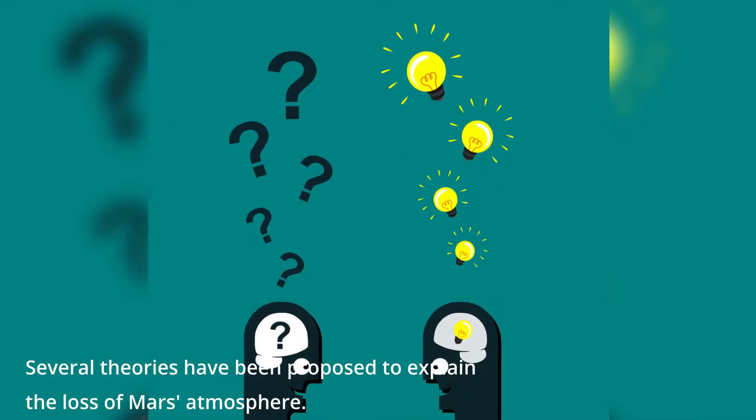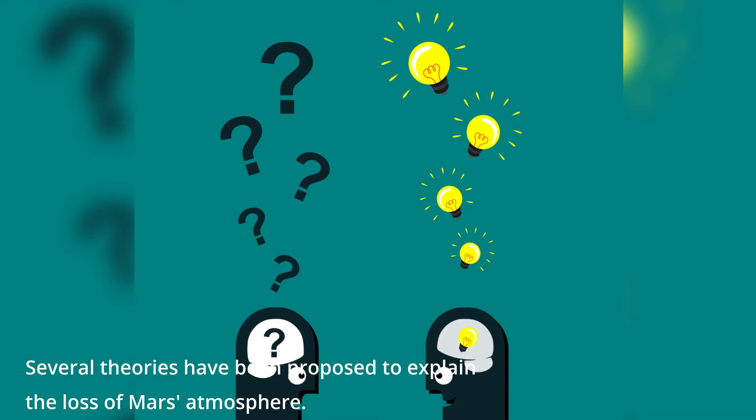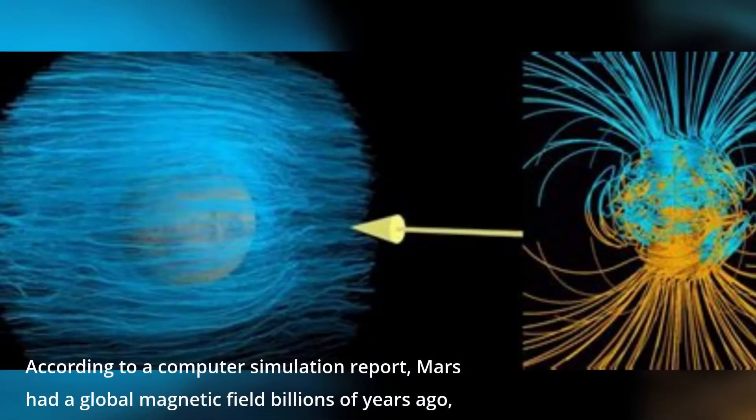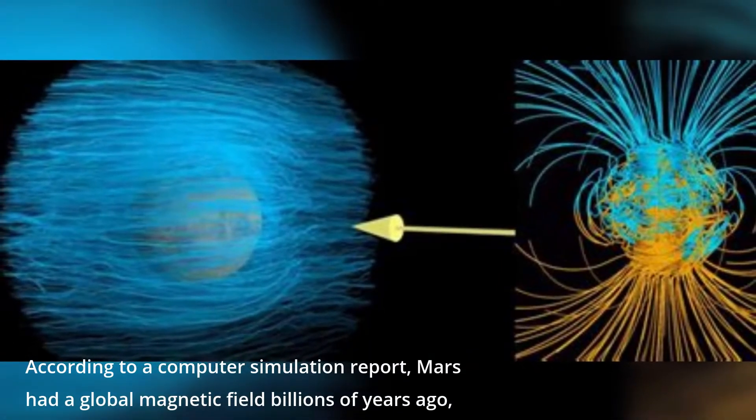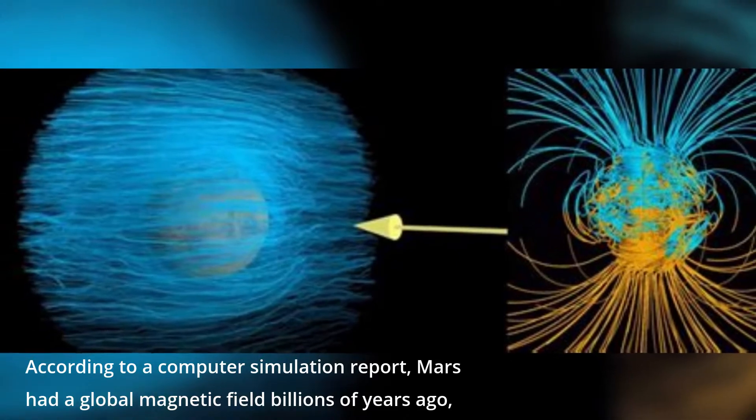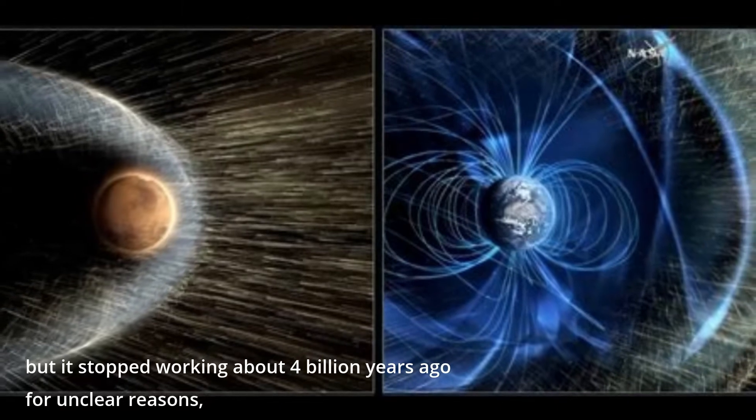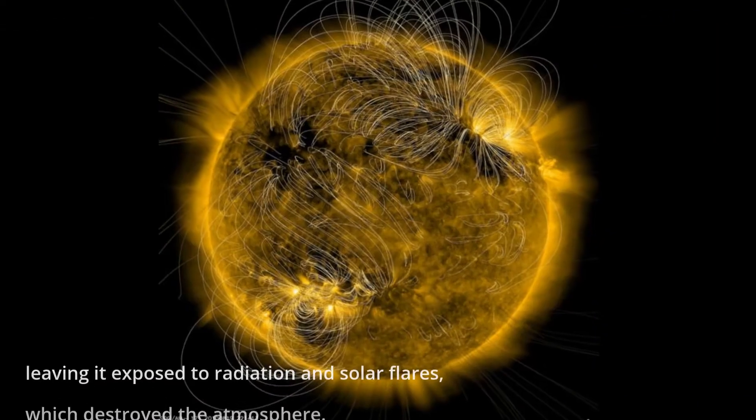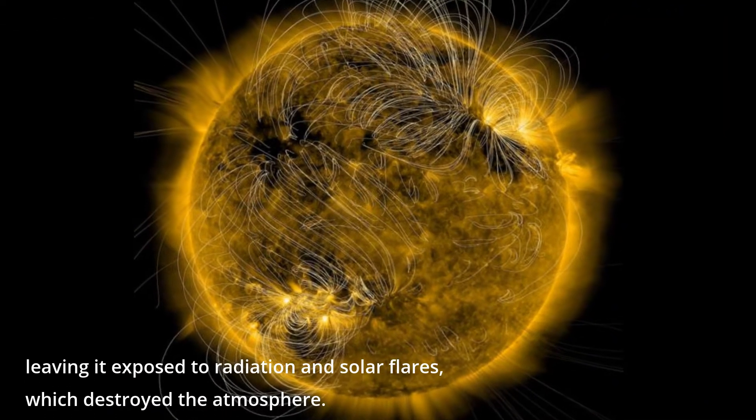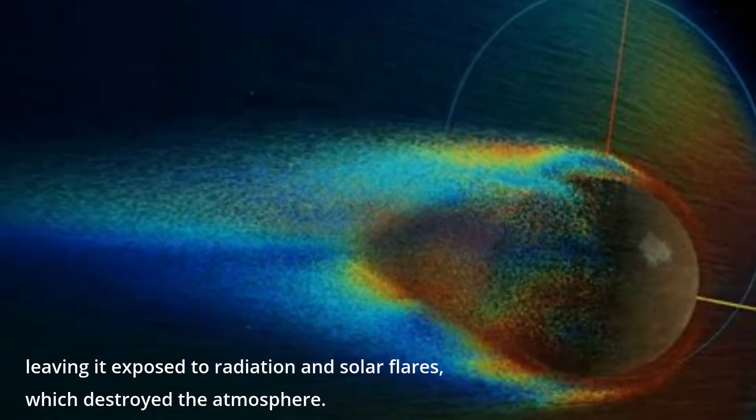Several theories have been proposed to explain the loss of Mars' atmosphere. According to a computer simulation report, Mars had a global magnetic field billions of years ago, but it stopped working about 4 billion years ago for unclear reasons, leaving it exposed to radiation and solar flares which destroyed the atmosphere.